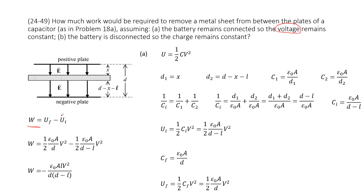How can we find the energy for capacitors? The voltage is constant, so we can use electric energy as one-half C times V squared. In this case V is a constant — it's given. So we need to find the capacitance at initial and final, and then we can get the corresponding electric energy.